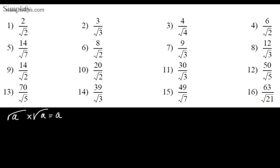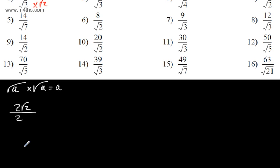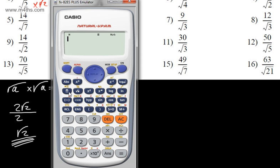What I'm going to do is multiply both the numerator and the denominator of the fraction by the surd value in the denominator. So in the numerator I get two lots of root 2, and in the denominator I get root 2 multiplied by root 2, which gives me 2. The 2s cancel, so we simply write this as root 2. You can check on a calculator — 2 over root 2 gives us root 2.